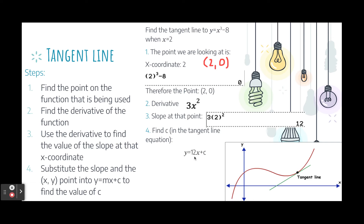Now I can write the equation of the straight line as y equals 12x plus c. Substituting our point where x equals 2 and y equals 0, and solving, we get c equals negative 24. Therefore, the equation of the tangent line is y equals 12x minus 24.